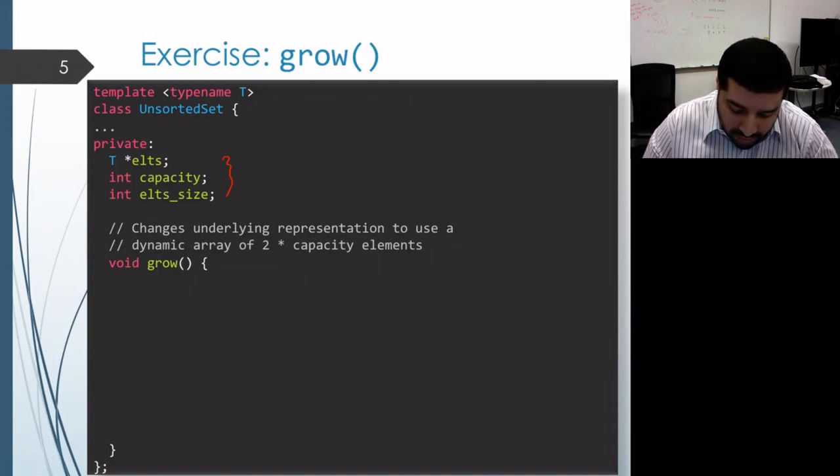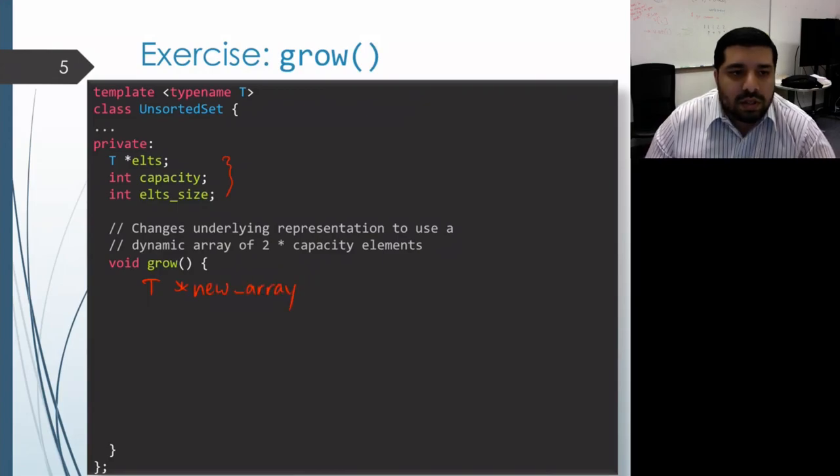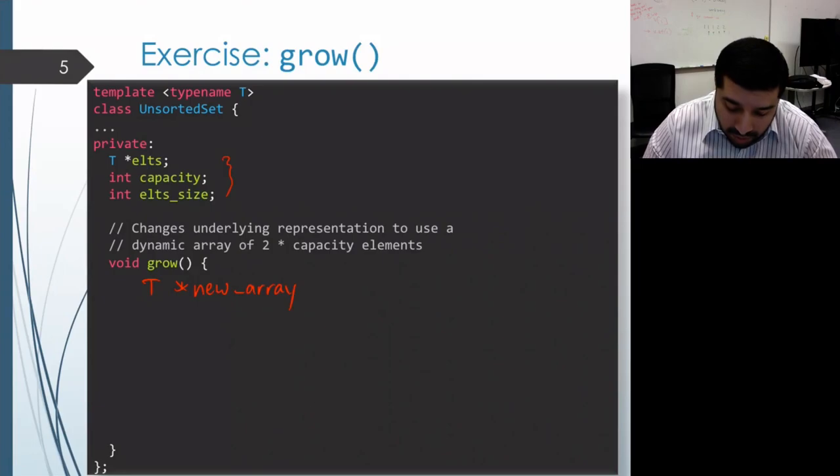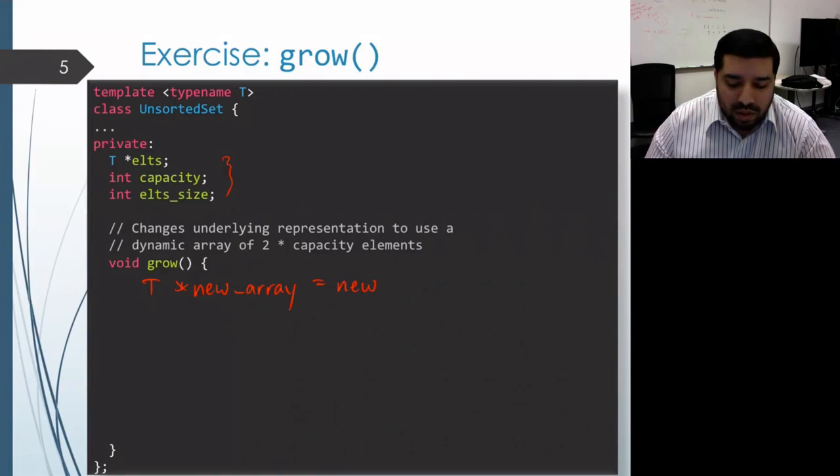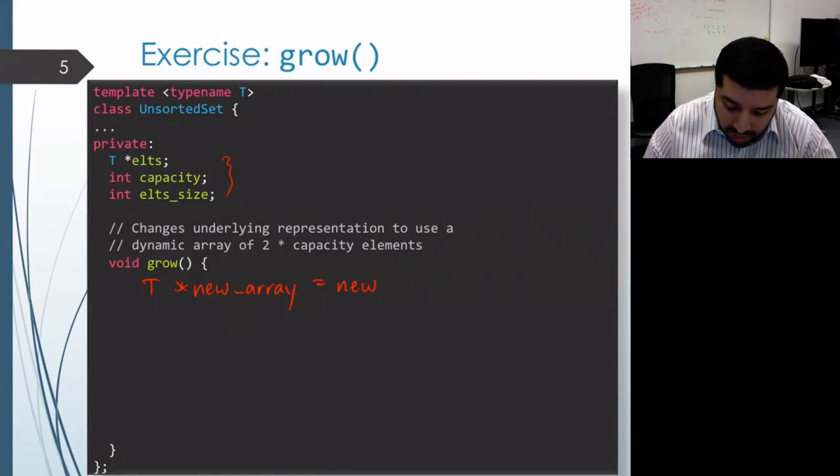So what we'll do is we'll create a local variable that's going to be pointing at the first element in our new array, we'll call it new_array. And then we'll initialize it to the result of invoking the new operator to construct a new array of size two times capacity.